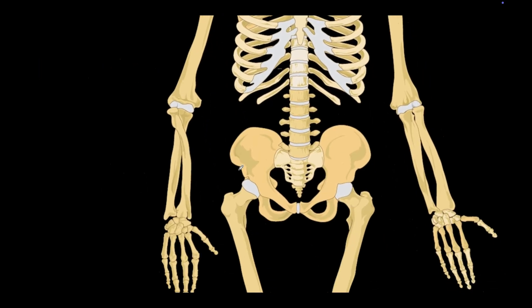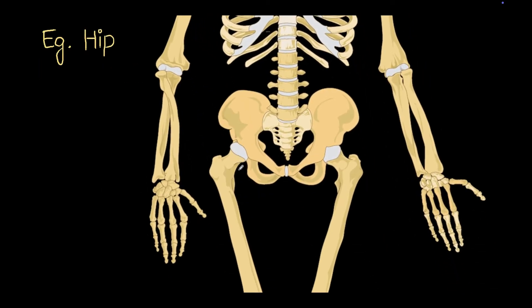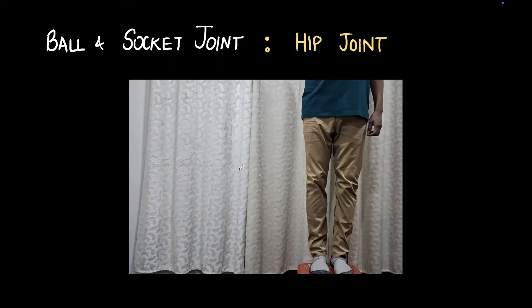Another example is the hip joint. This also has a ball and socket feature. The ball is here, and it sits inside the socket. Let's see this in action.